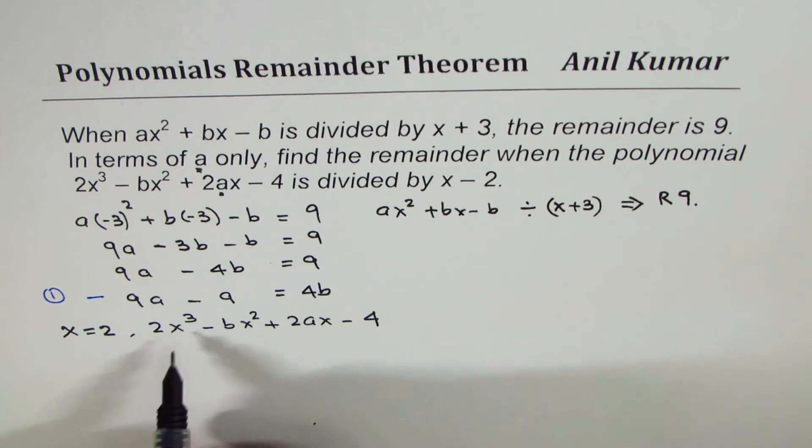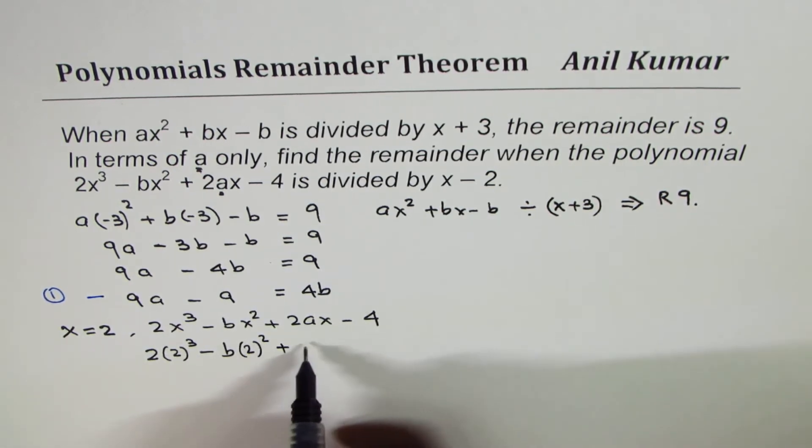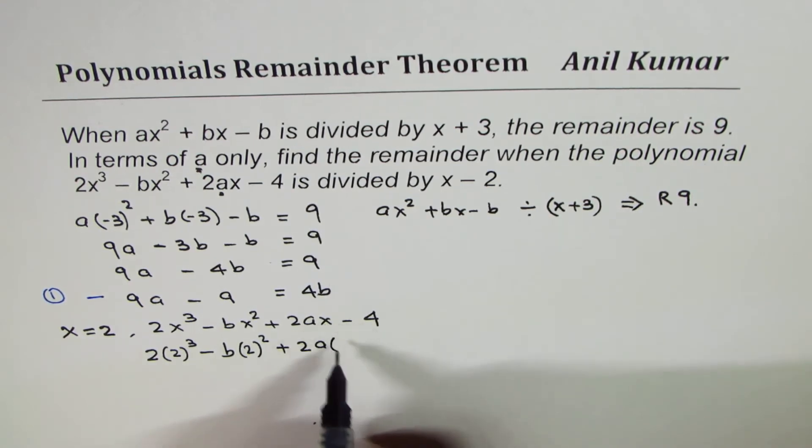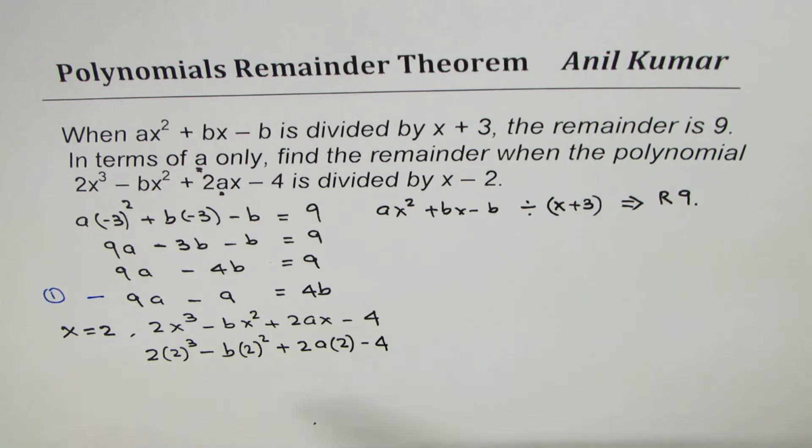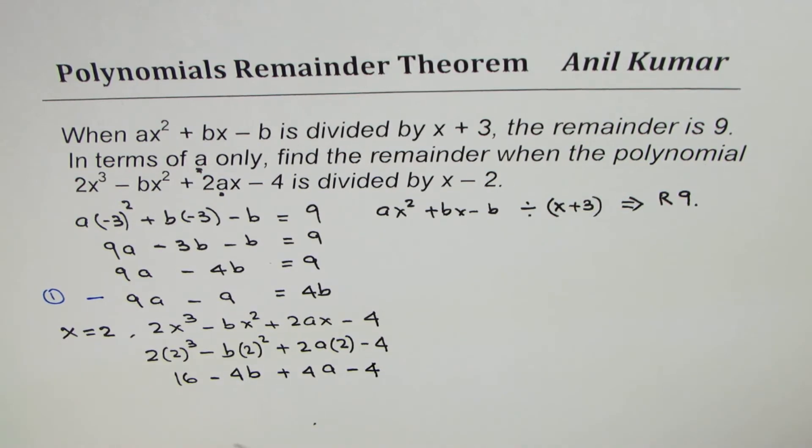So for x I am writing now 2. So we get 2 times 2 cube minus, instead of b, okay we'll replace it at the end after simplifying. We have minus b, x is 2. So we get 8. 8 times 2 is 16. 16 minus 4b. And 2 times 2 is 4. So we get plus 4a minus 4.